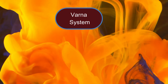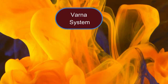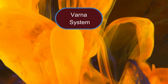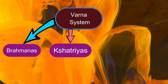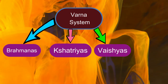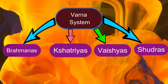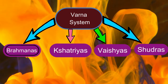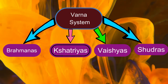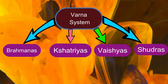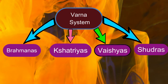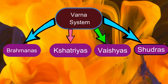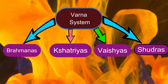Regarding the Varna system, during the Vedic Age society was divided into four classes: Brahmanas, Kshatriyas, Vaishyas, and Shudras. Brahmanas used to perform Yajnas, Kshatriyas were warriors, Vaishyas were involved in trade, and Shudras used to serve all the upper three classes.